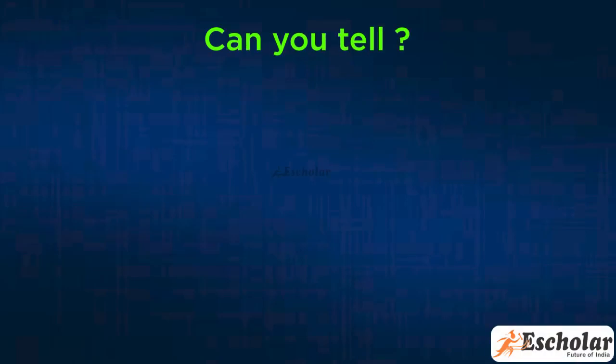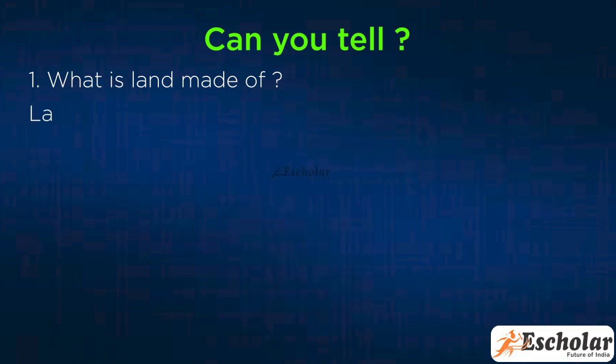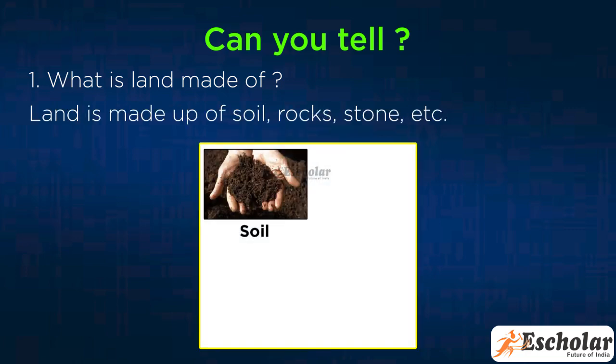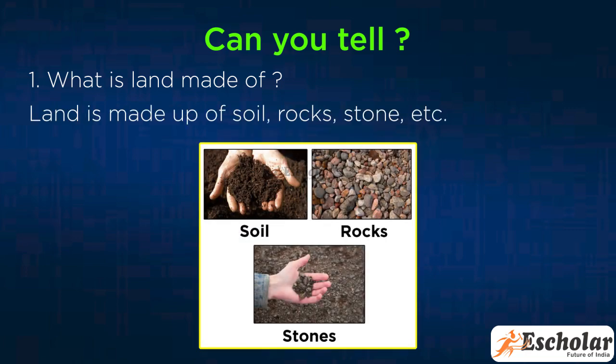Can you tell? First, what is land made of? Land is made up of soil, rocks, stone, etc.